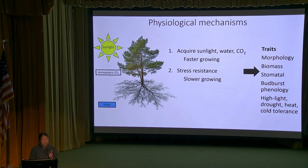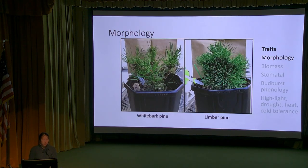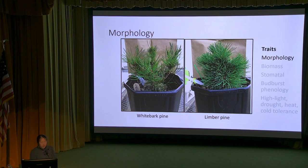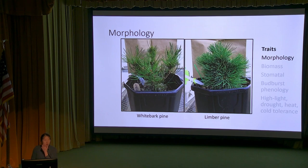We measured morphology, focusing on the crown or canopy of each seedling - measuring needle arrangement, branching arrangement, and crown architecture. Looking at example five-year-old seedlings, limber pine has more densely packed needles and foliage up top, and appears to have more needles compared to whitebark pine. We have various metrics to assess and compare crown morphology between species.